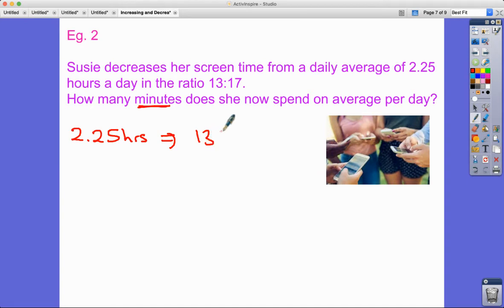Now I'm going to use that and it's going to take me straight to the answer. So 135 minutes - she decreases her screen time, therefore I'm going to do small over big. I'm going to times that by 13 over 17, which is equal to an answer of 103.2352941.